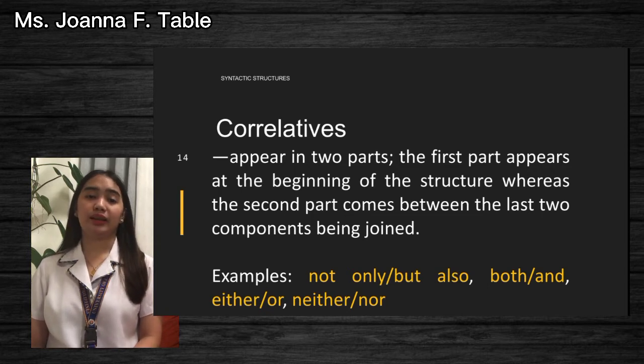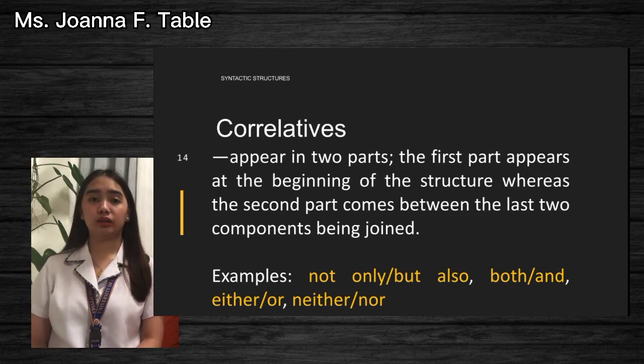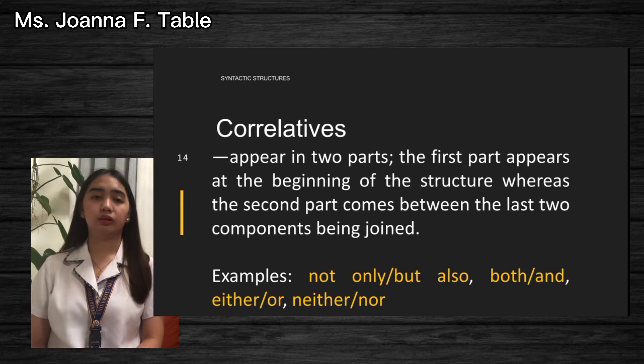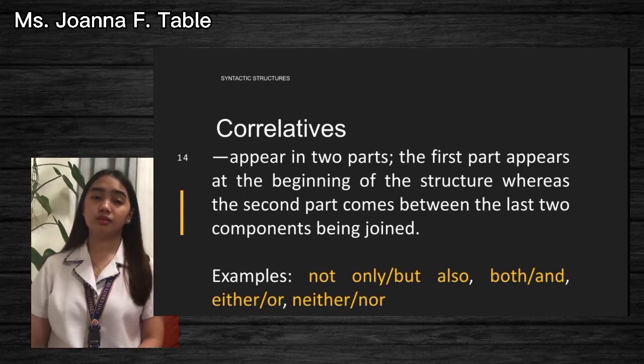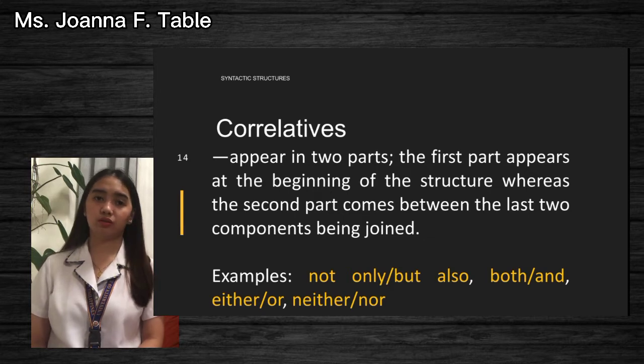The examples of correlatives are: not only...but also, both...and, either...or, and neither...nor.